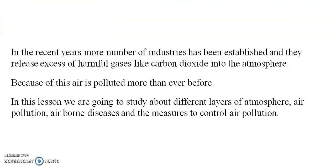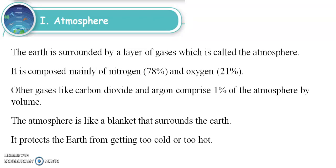In recent years, more number of industries have been established and there are excess amounts of gases like carbon dioxide released into the atmosphere. The earth is surrounded by a layer of gases called the atmosphere. Nitrogen is 78% and oxygen is 21%. Other gases like carbon dioxide and argon comprise 1% of the atmosphere.